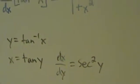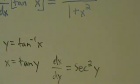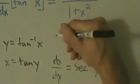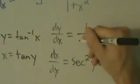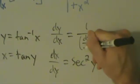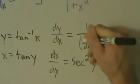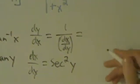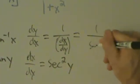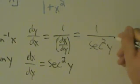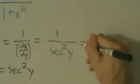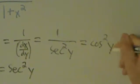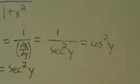Now we're going to use this and the inverse function theorem: dy/dx equals 1 over dx/dy, and that's 1 over secant squared of y. And 1 over secant squared is actually just cosine squared of y, with our variable being y.